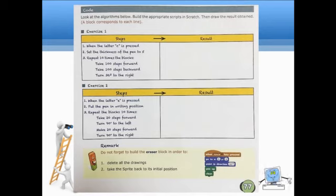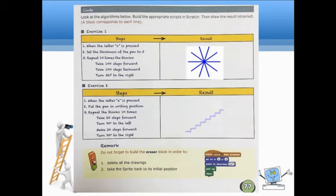Now, going back with exercise 1. So, in exercise 1, after completing all the steps, what will the result be? So, here's the result. And for exercise number 2, a ladder will be formed. Take note, my dear students, do not forget to build the eraser block. Why? One, in order to delete all the drawings. And the second one is to take the sprite back to its initial position.